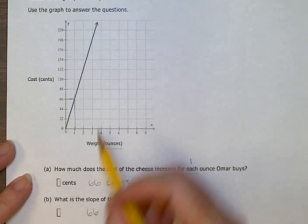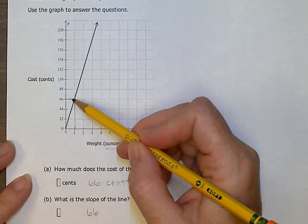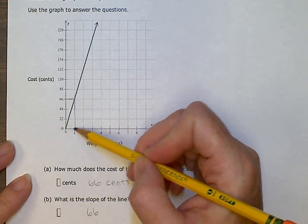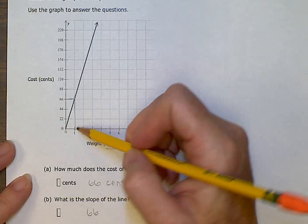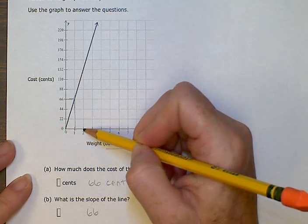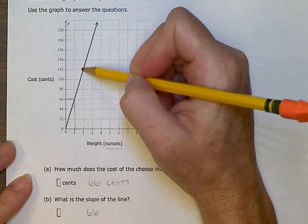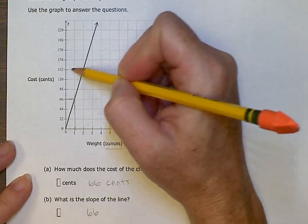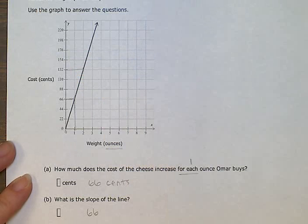Because that's how much the graph changed in one ounce. You can check it. In two ounces, it went up to this point. That was at one hundred and thirty-two. That's just the same as sixty-six plus sixty-six. So every time it moves up one ounce, the line goes up, or the slope goes up, sixty-six more cents.